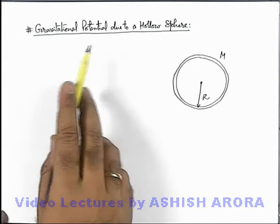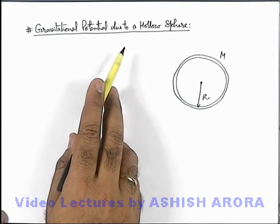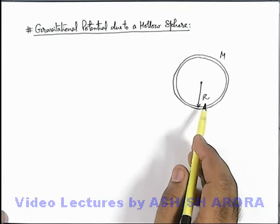Let's discuss gravitational potential due to a hollow sphere. Say we are given a hollow sphere of mass M and radius R.